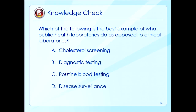Which of the following is the best example of what public health laboratories do as opposed to clinical laboratories? The options are: A, cholesterol testing; B, diagnostic testing; C, routine blood testing; and D, disease surveillance. The correct answer is D, disease surveillance.